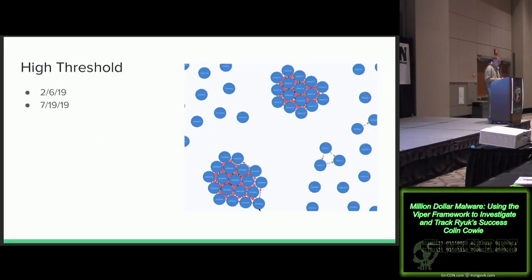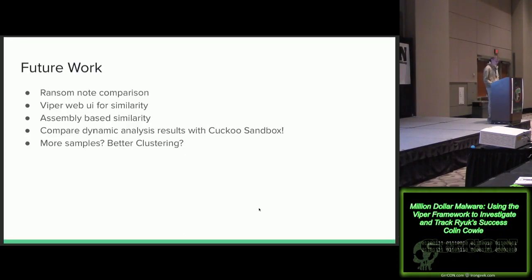Some groups showed very high activity thresholds, with many samples pushed out in a short period — one burst right after New Year's and another in mid-July 2019. Future work includes incorporating Cuckoo Sandbox to do dynamic similarity analysis in addition to static, comparing how ransom notes have changed over time, and continuing to collect more Ryuk samples.